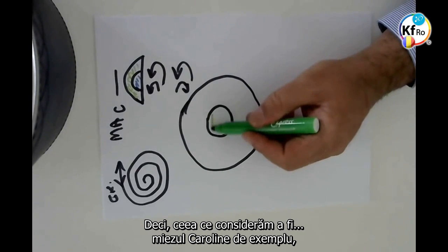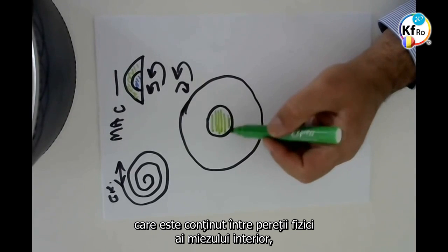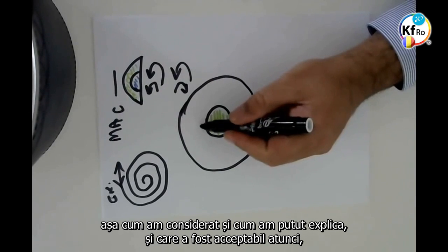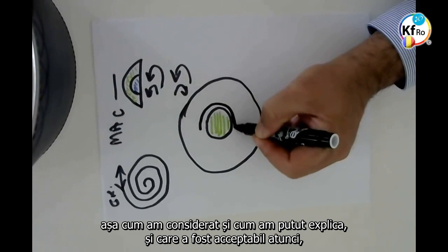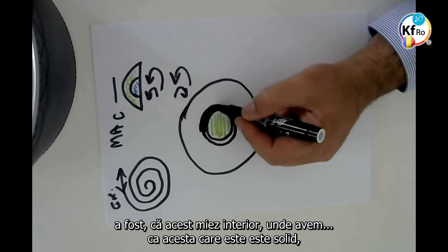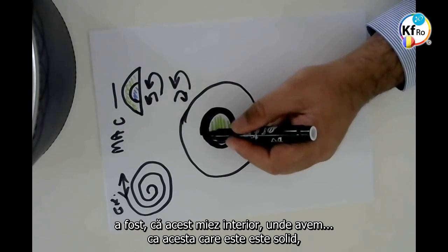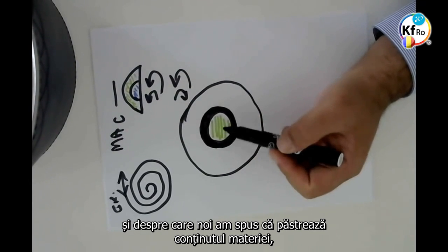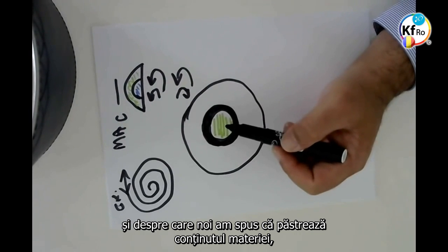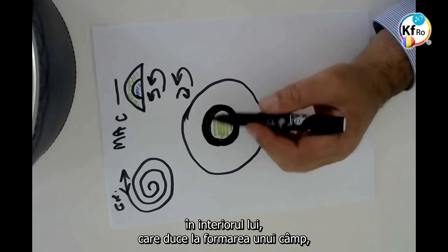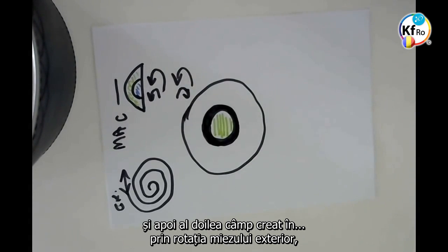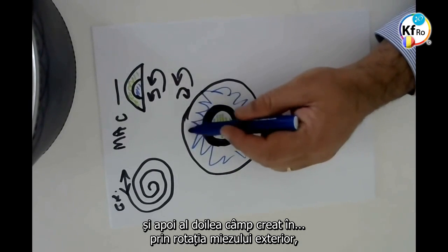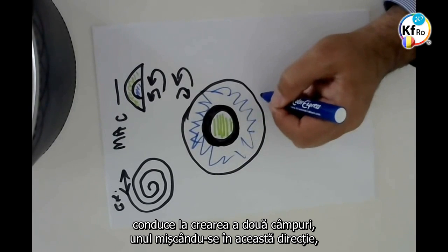What we assumed to be the Caroline core, contained in the physical world of the inner core, was acceptable at the time. This inner core, where we have like this is a solid, we said that it holds containment of the matter inside it that leads to the creation of one field. And then the second field created by the rotation of the outer core leads to creation of two fields.